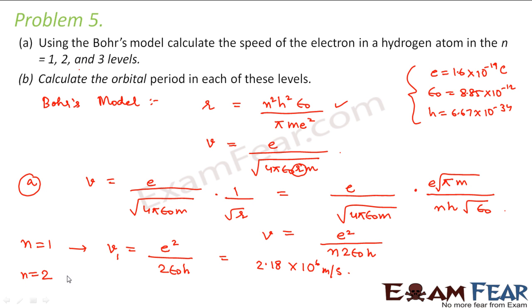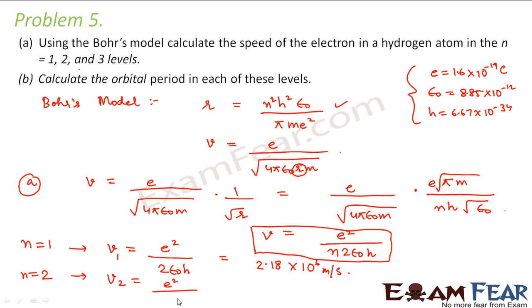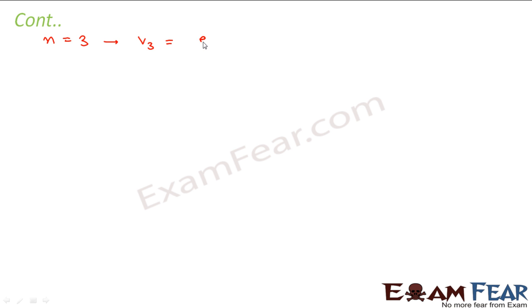Similarly, for n equal to 2, v₂ becomes equal to e² divided by 2×2 ε₀ h, which is e² divided by 4 ε₀ h. Putting values, we get 1.09×10⁶ meters per second. For n equal to 3, v₃ equals e² divided by 6 ε₀ h, which comes out to be 7.27×10⁵ meters per second.